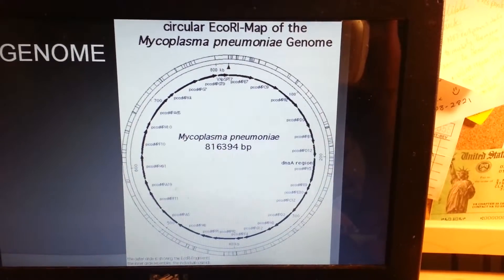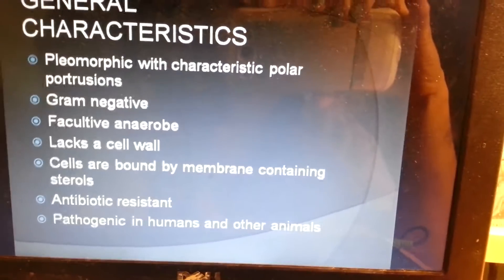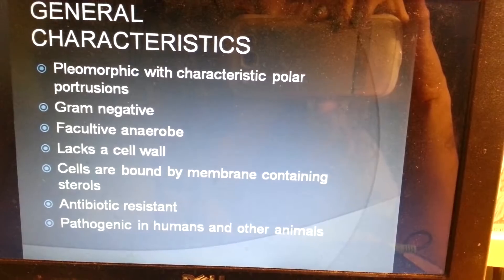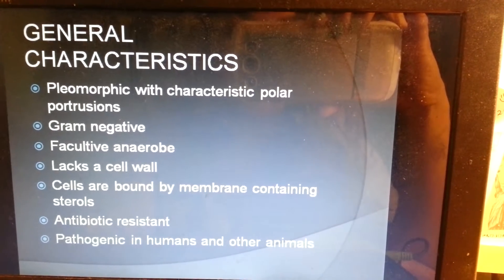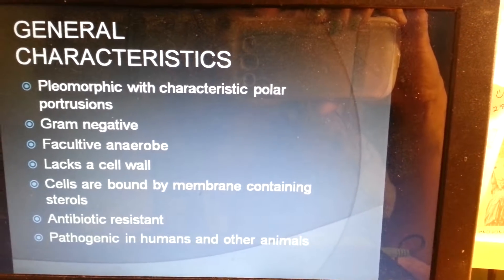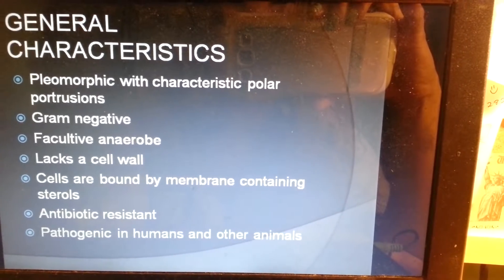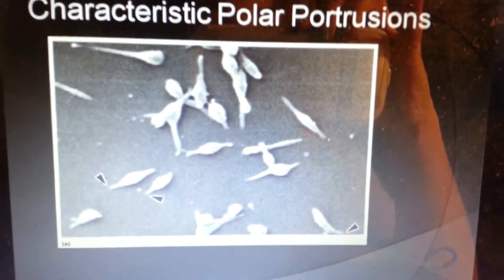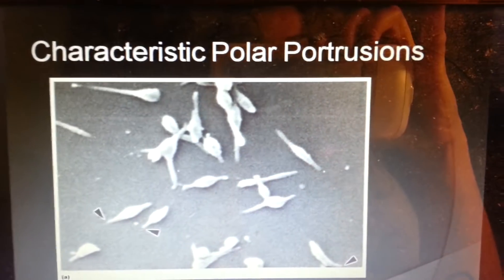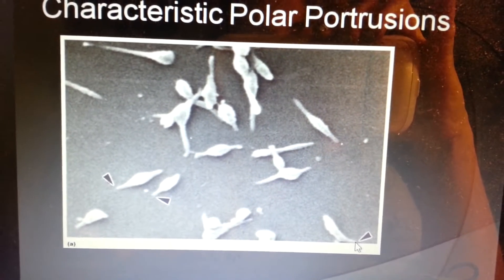This is a circular map of the Mycoplasma pneumoniae genome. Its general characteristics include pleomorphic with characteristic polar protrusions. It is gram-negative, facultative anaerobe. It lacks a cell wall. The cells are bound by a membrane containing sterols. It is antibiotic resistant and pathogenic in humans and other animals. Here are the characteristic polar protrusions, where you see the arrows here towards the end of the structures.